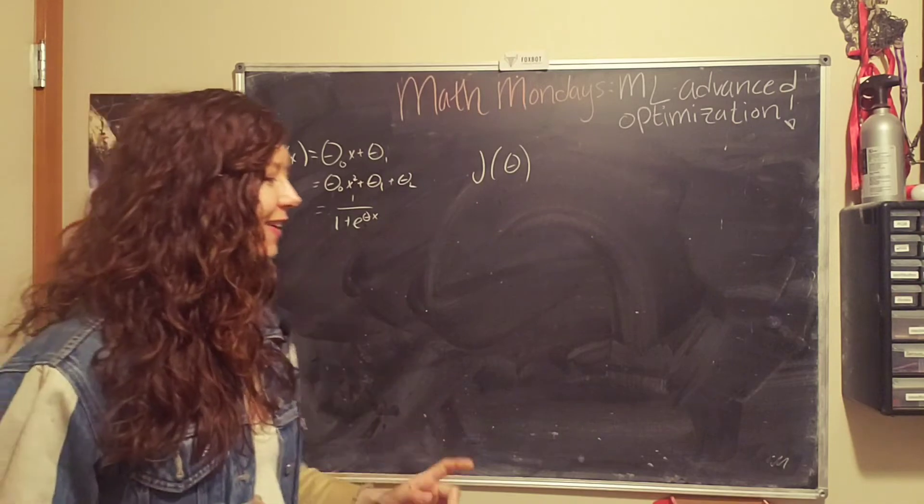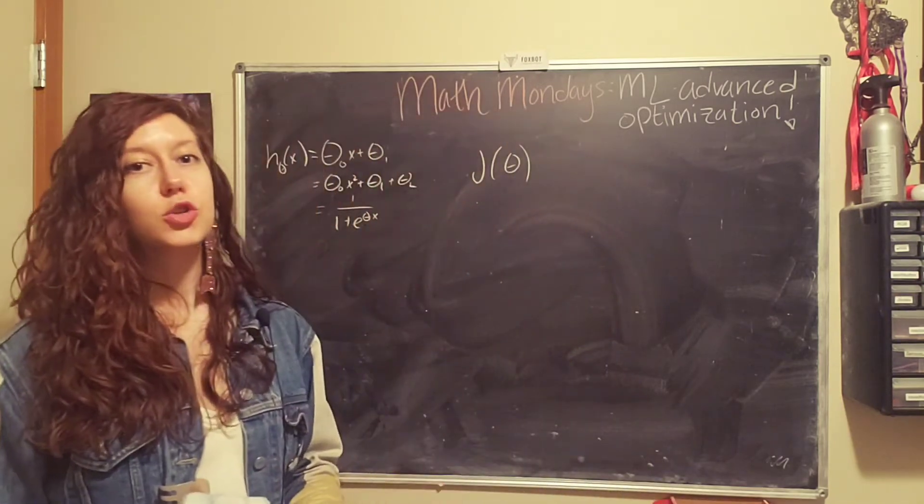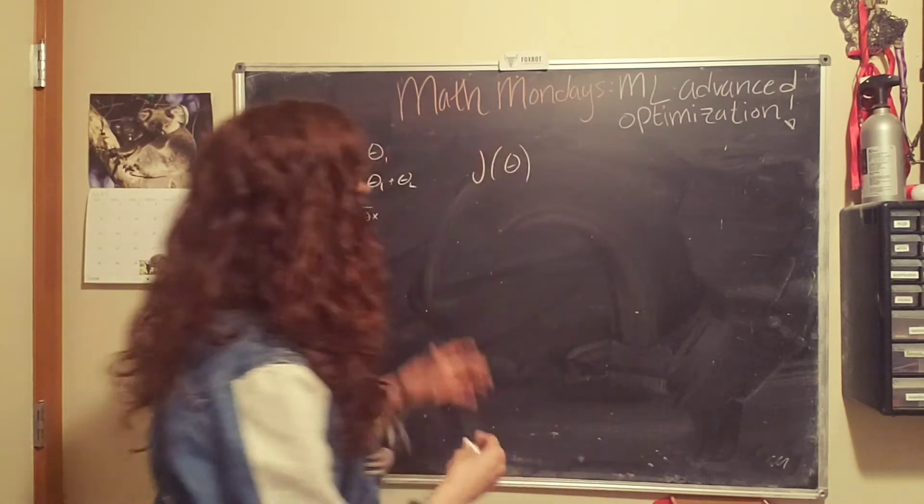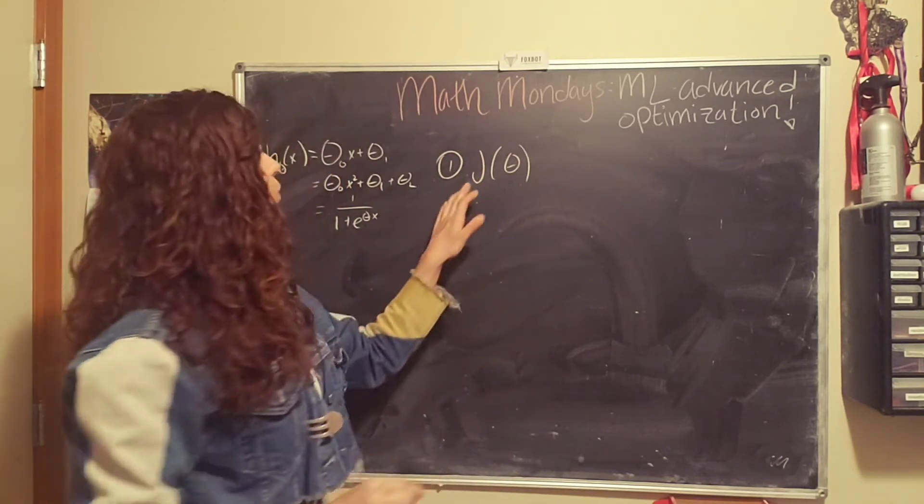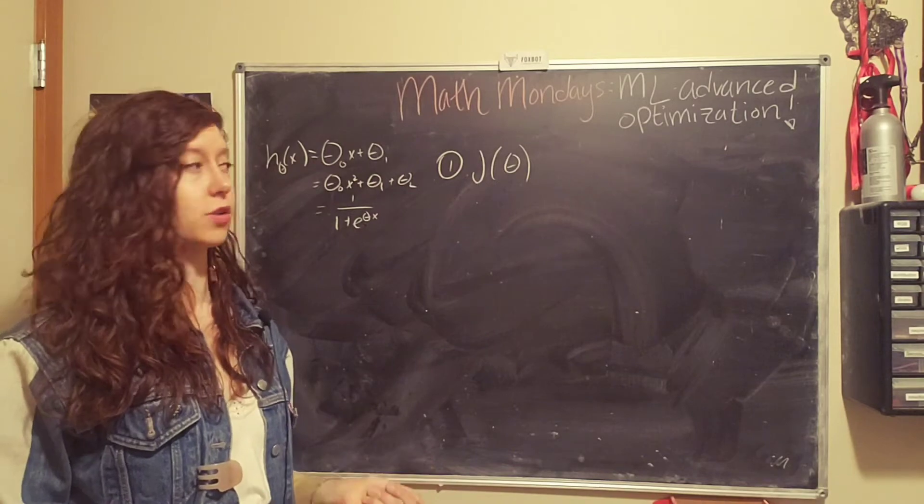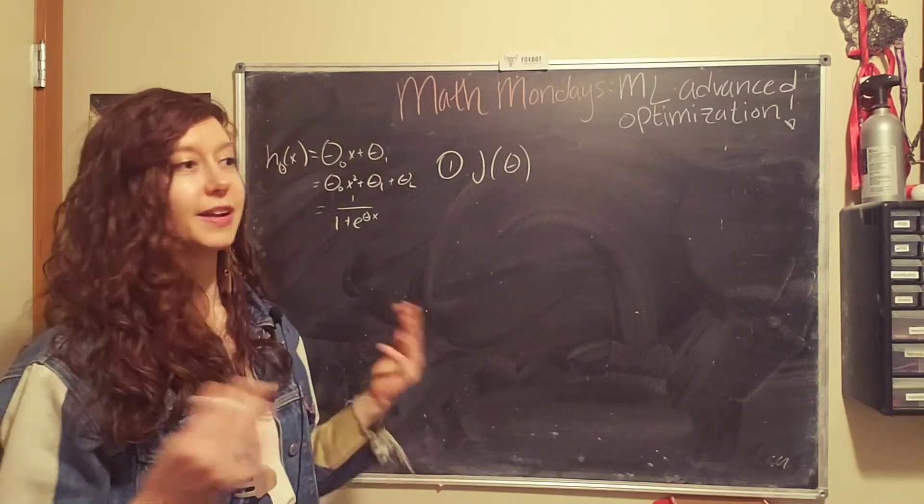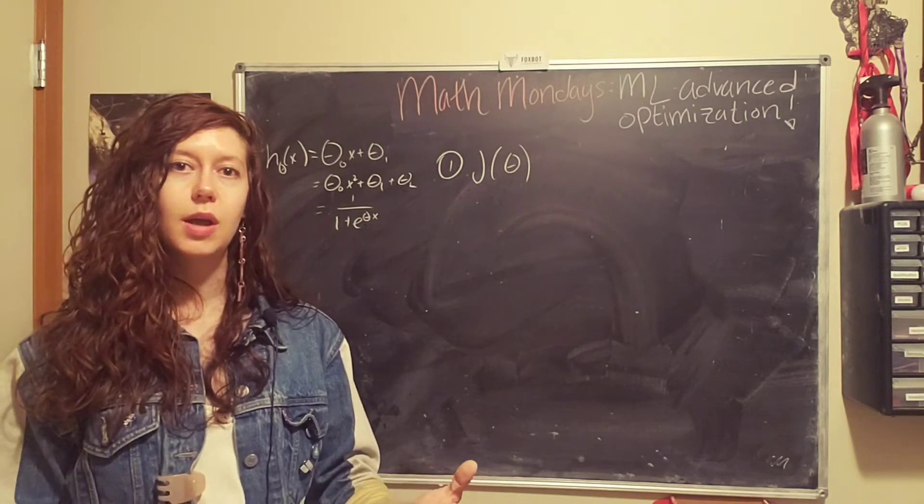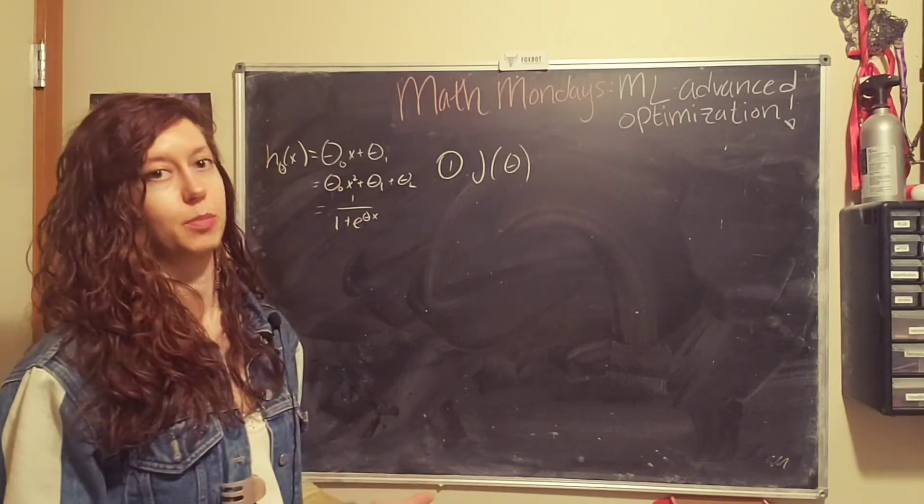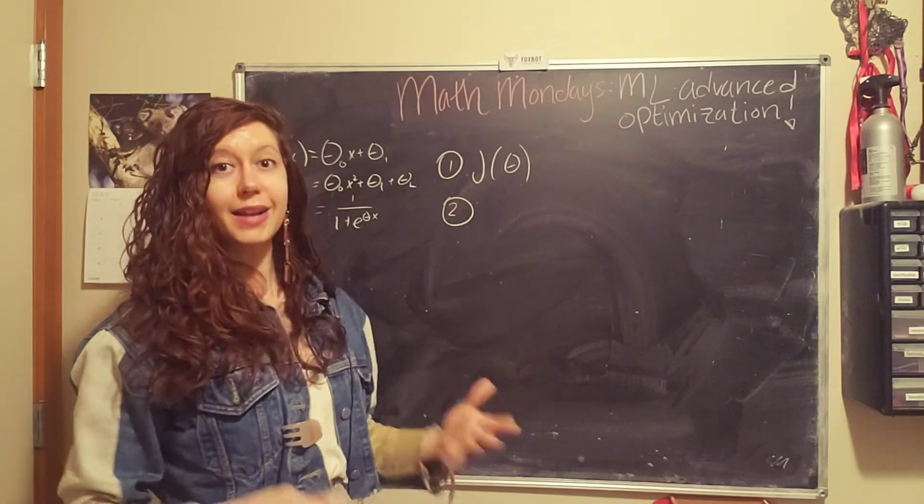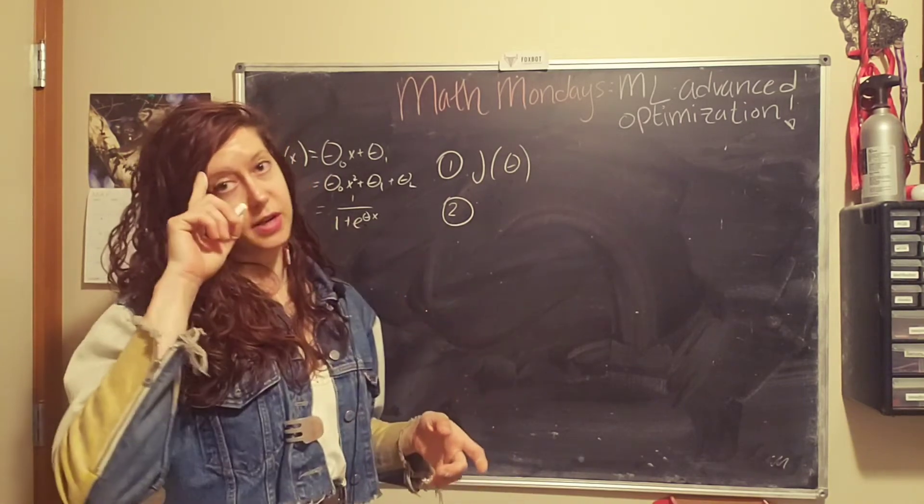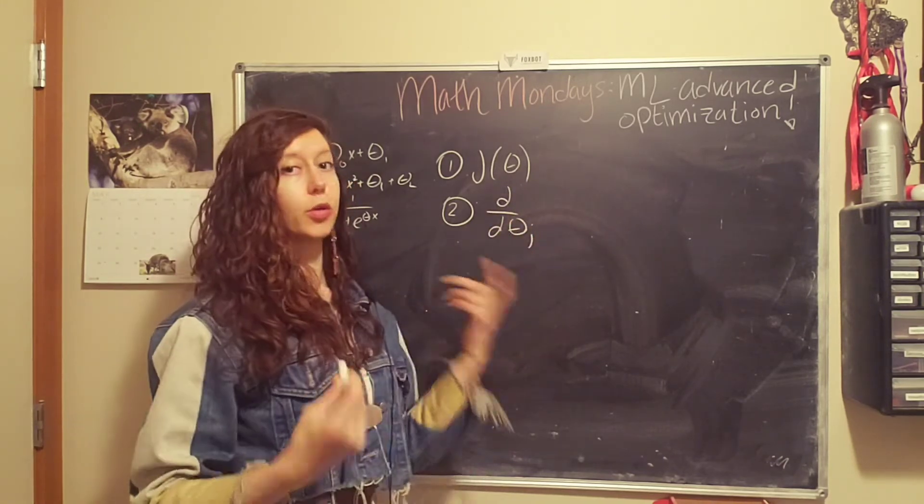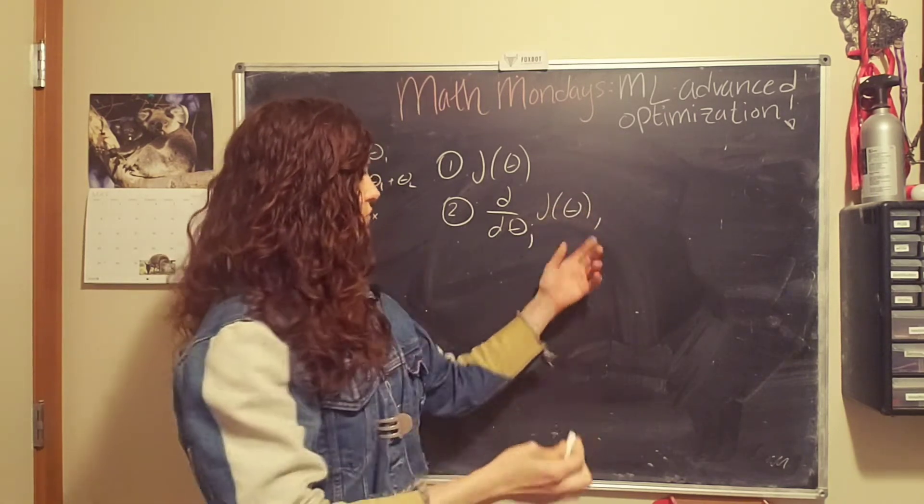So gradient descent is a way to minimize our cost function. And the way that we do that is, first, we define our cost function, which is going to depend on the hypothesis function. It's basically a fancy average, where we find the difference between the hypothesis function and the predicted value, and then we divide by the total number of data samples. So we're going to have to define that in our code.